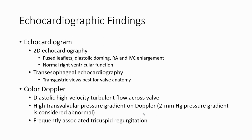On echocardiography, we can find thickened leaflets, diastolic doming, right atrium and inferior vena cava enlargement. We can also find normal ventricular function in tricuspid stenosis.